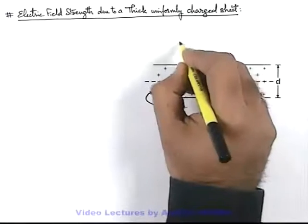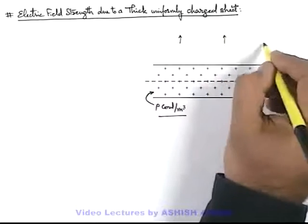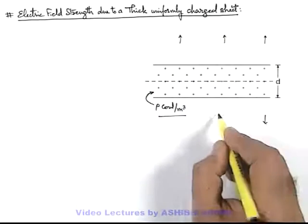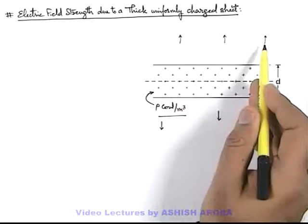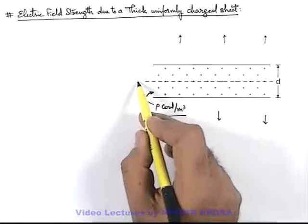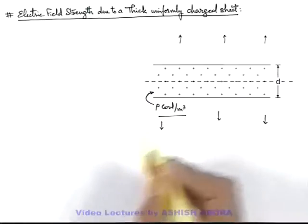Now as being positively charged, in its outside zone, the electric field will exist in the direction away from the charge. And all these electric field it'll appear that it is originating from the central plane of the sheet.